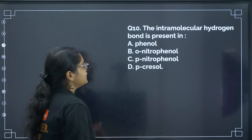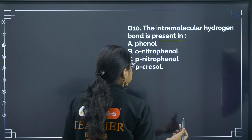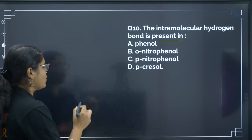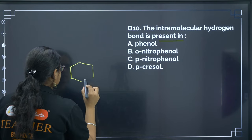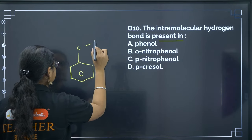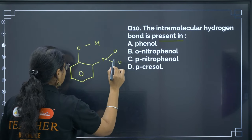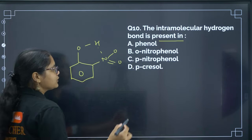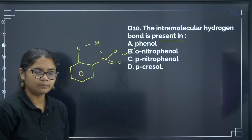Next: intramolecular hydrogen bond is present in — intramolecular hydrogen bonding is present in ortho-nitrophenol. In that structure, there is intramolecular hydrogen bonding. So the correct answer is option B.